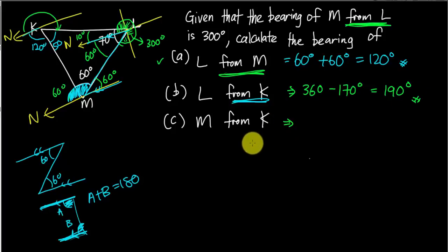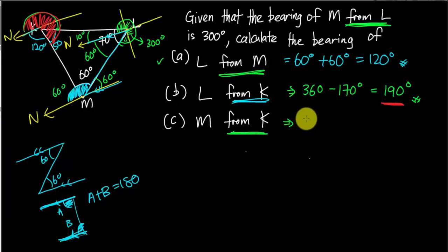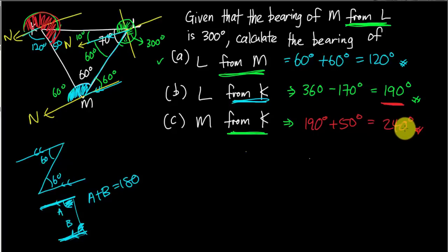For part C, M from K — so from the north of K, I rotate until I touch line KM. We already found the bearing of L from K is 190°. From that point I just add another 50°, which is very simple. So it's 190° plus 50° = 240°. Since we already found L from K, M from K is just rotating the whole thing plus another 50°. The answer is 240°.